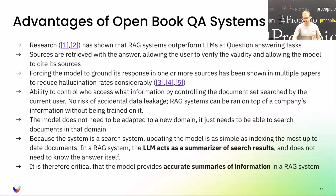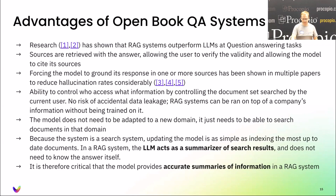Information access: because it's driven by a search system, if you don't want some user to access information, you just block those documents from being retrieved. Whatever ACL rules you have in place for your search system, you just apply them to the RAG system.